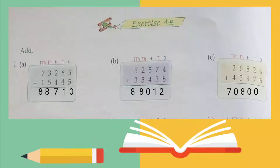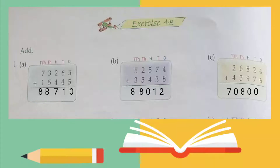We have ten — one carry. Six plus four is ten, plus one is eleven — one carry. Two plus four is six, plus one is seven. Three plus five is eight, and seven plus one is eight. So the answer for part A is 88,710.